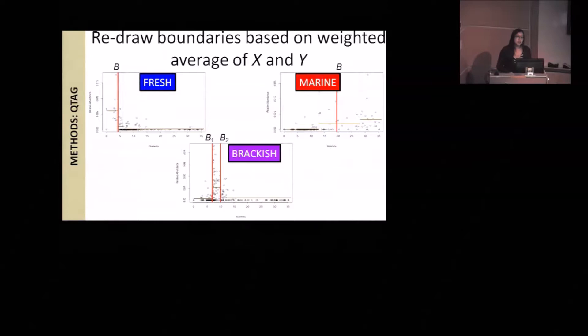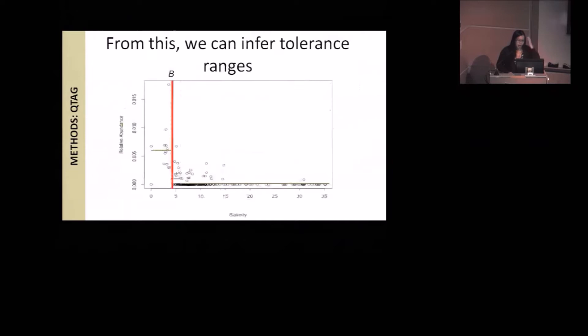Finally, once it has its classifications, it redraws this turnover point that we're trying to find by averaging a weighted average of X and Y. In the case of brackish, you don't weight them because there needs to be two boundaries anyway. So basically you draw a new boundary and this is the turnover point that we are trying to get from each OTU in a community. If we go back to the original data that I showed you, this is the final boundary that QTAG had drawn for it. From this, we can infer basically a tolerance range. So in the bar on the bottom, you can see there's a dark blue bar. This is the inferred tolerance range that goes from zero parts per thousand up until that red line. Then the light blue bar is showing you when the last non-zero abundance is.